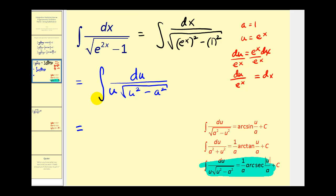So this will be equal to one over a, or one over one, that's just one times arc secant of u over a, which would be e to the x over one, which is just e to the x plus c.